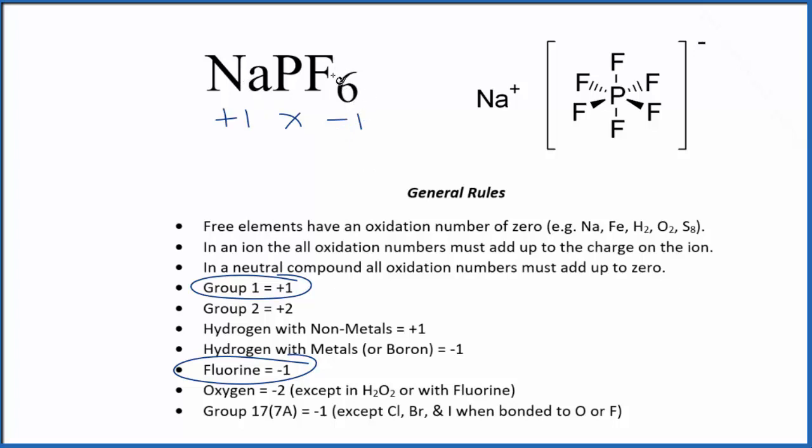and there are six of them. So a negative six and a plus one. Phosphorus, that has to have an oxidation state of plus five. So that's a fairly easy way to do it.